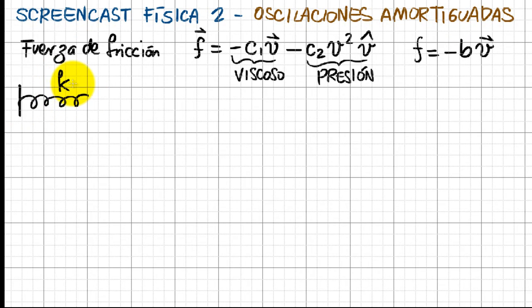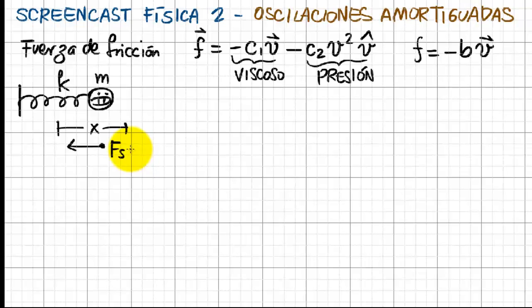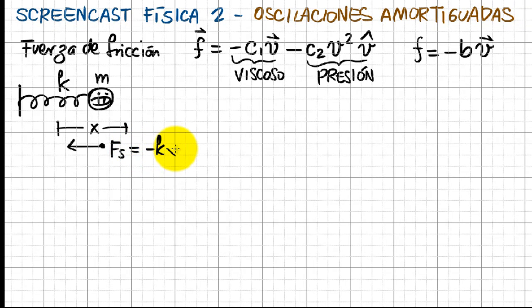So this is the spring with a constant k, and here is the mass with a little face, the mass m. So I extend this mass by a length x, and I feel the spring force, which is minus kx, Hooke's law, and the friction force is just opposing the movement, which is minus v times the velocity, or x dot.